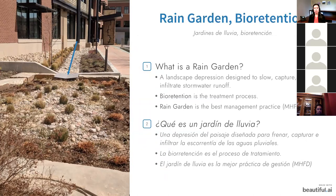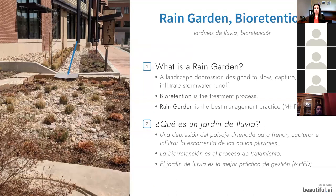Rain gardens are a depression used to slow, capture, and infiltrate stormwater runoff. Another term you might hear is bioretention — that is the type of treatment process, while rain gardens are the best management practice. I'll be moving back and forth between commercial and residential settings, as there are different best practices and regulations for each.